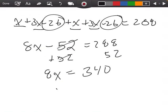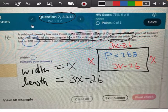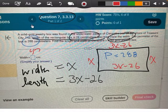Okay, so when we divide both sides by 8, I'm going to write 42.5. So let me come back over here to my problem. The width we just found to be 42.5.